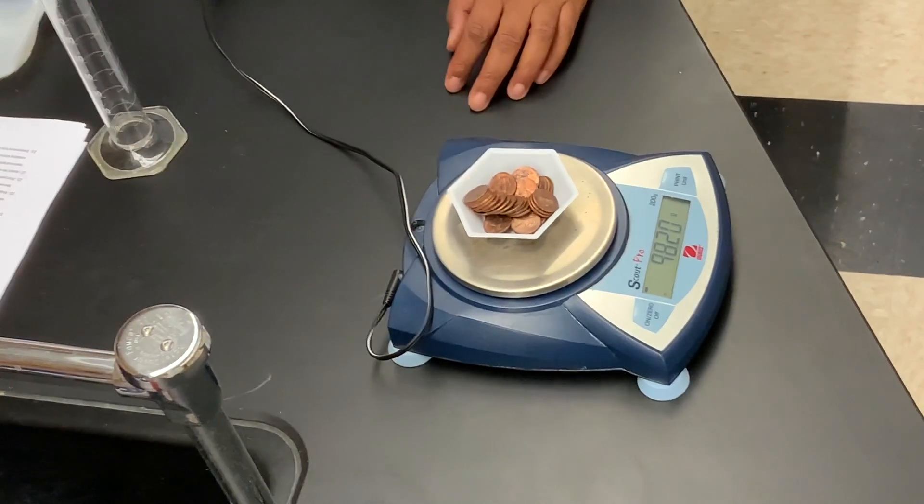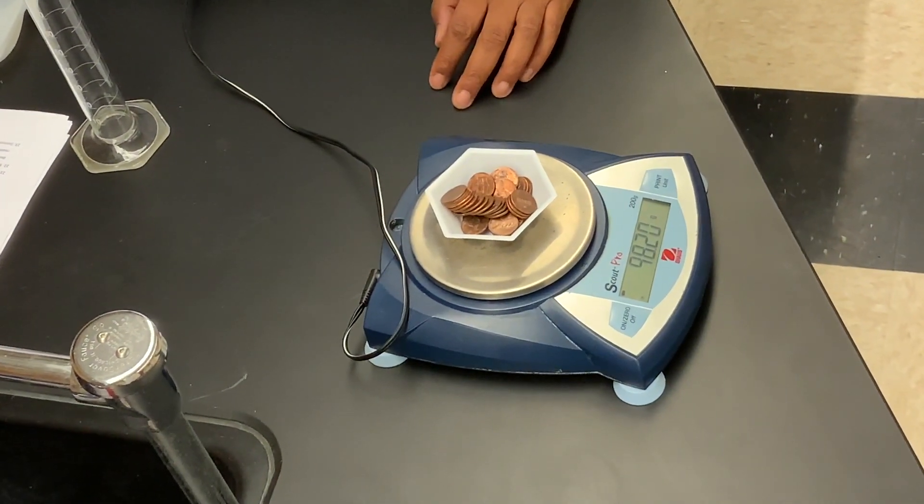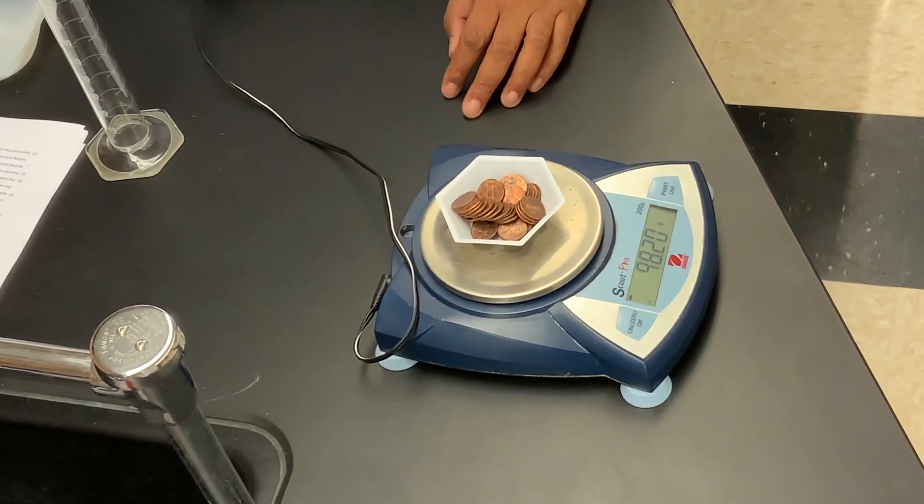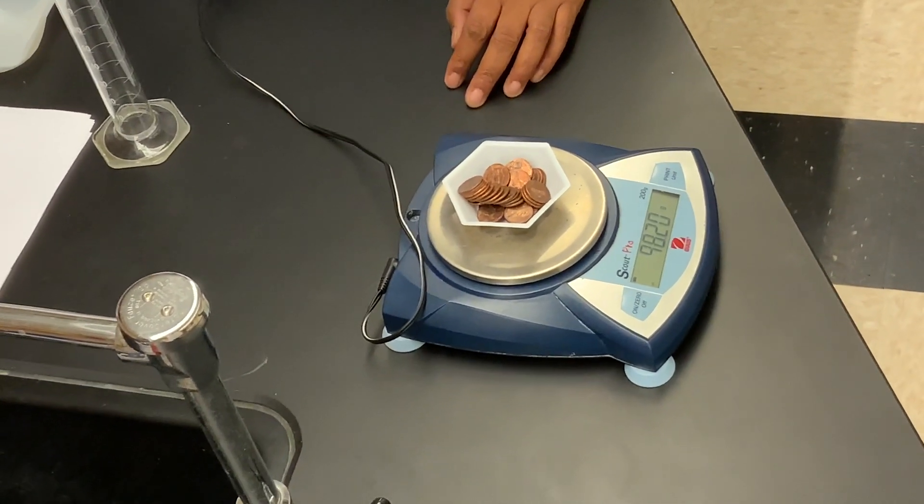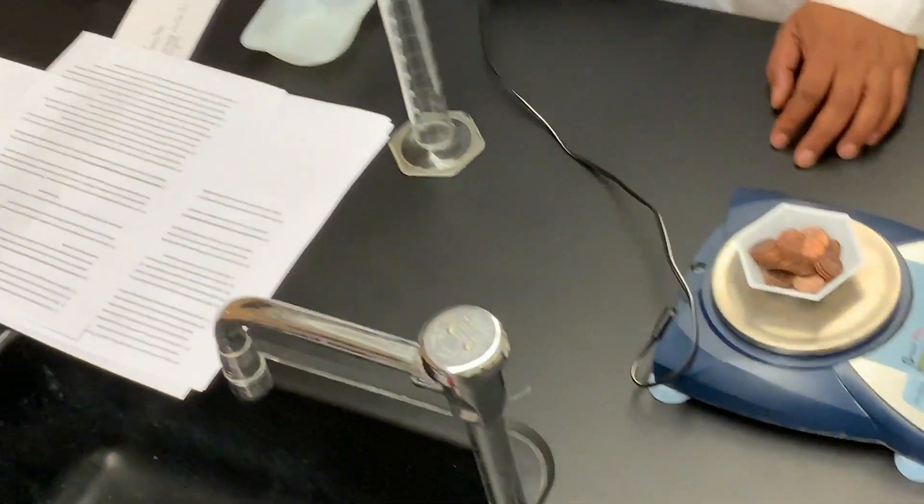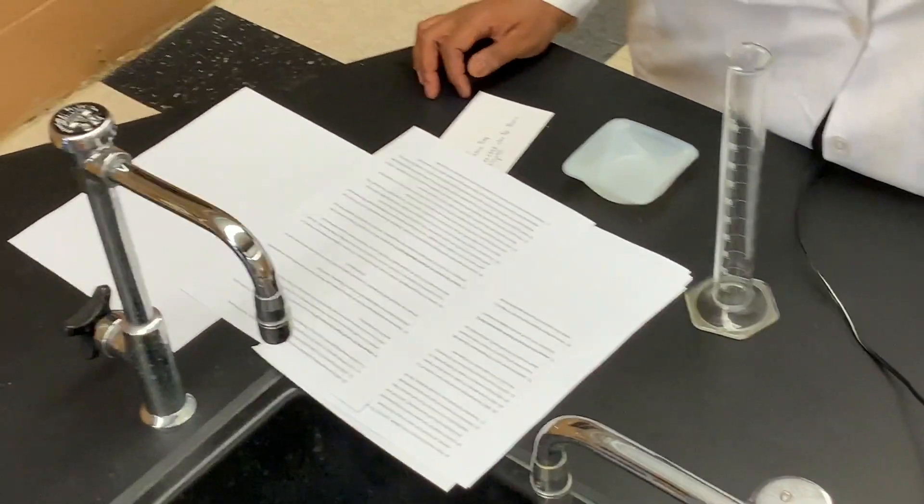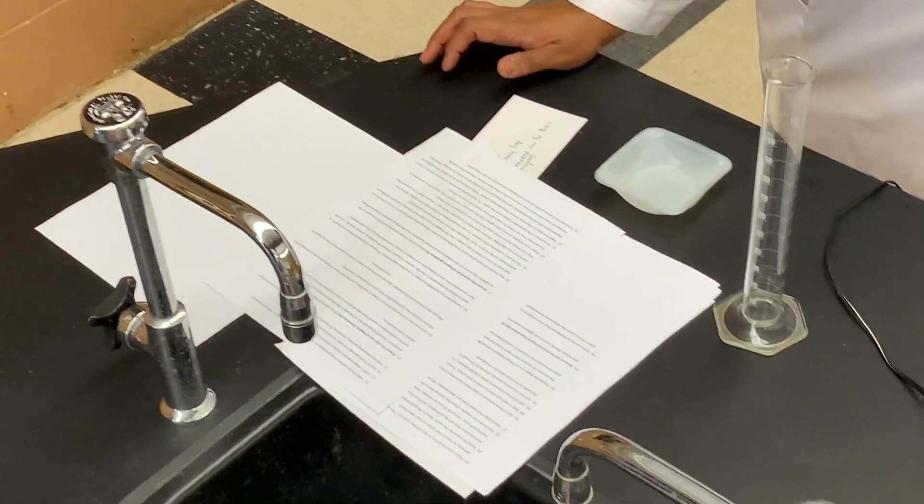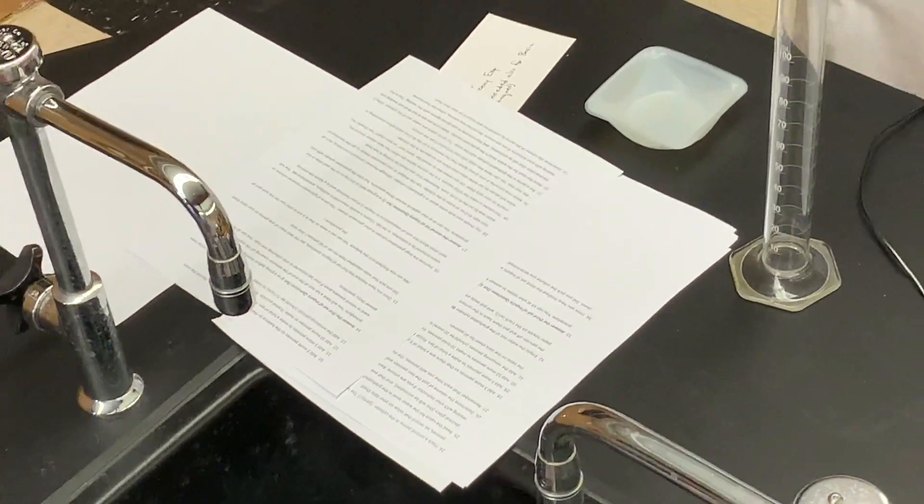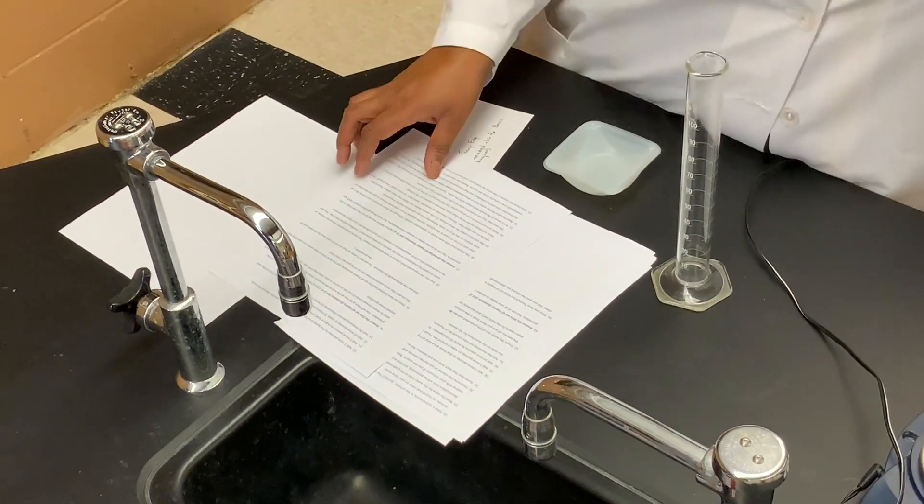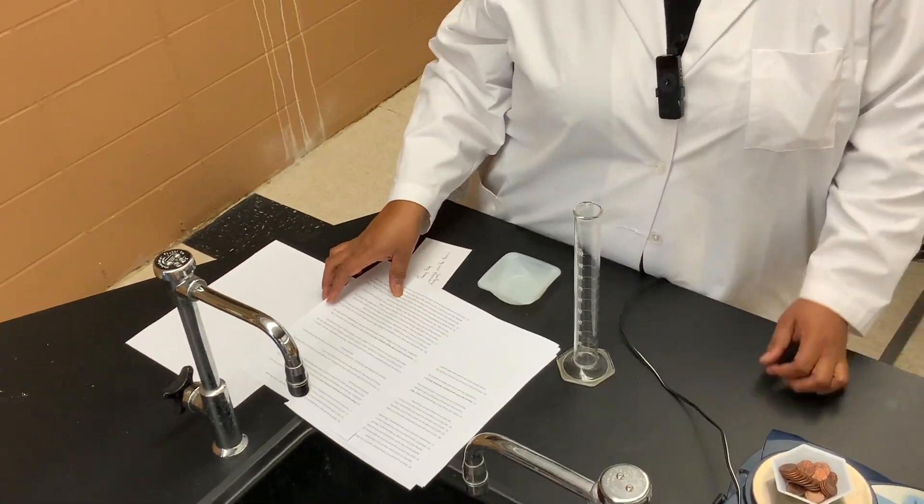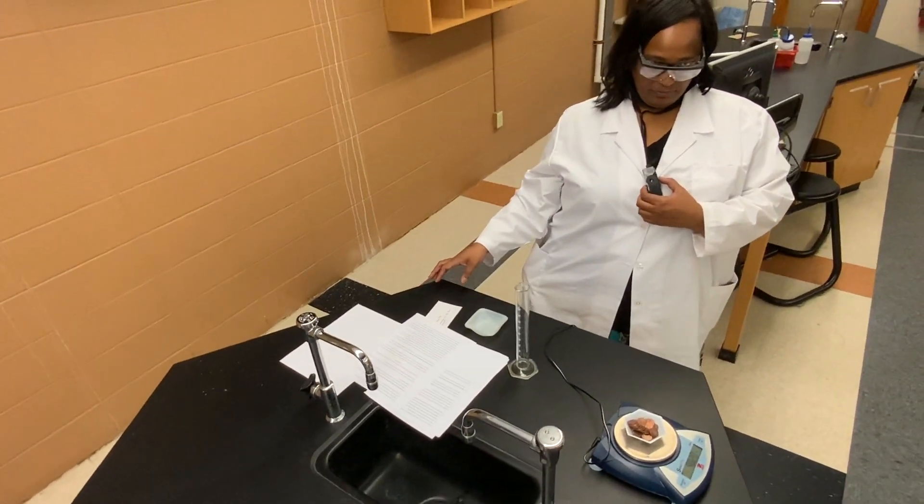Now that we've determined the mass of 40 pennies, 98.20 grams, we're ready to answer the first set of inquiry questions. Now that we have the masses recorded on our data sheet, take some time now to answer set number one of the inquiry questions.